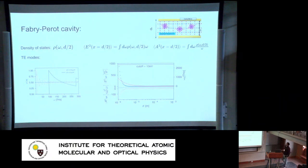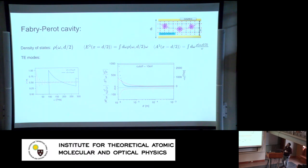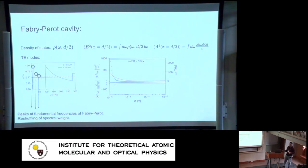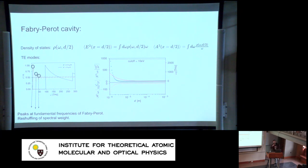I want to emphasize that the vacuum fluctuations alone are infinite, but their difference — photonic structure minus vacuum — is finite. Here are the results for the Fabry-Perot cavity, where D is the cavity size. I'm plotting the density of states as a function of position, divided by the free-space density of states, as a function of frequency. You can clearly see peaks corresponding to the resonant modes of the Fabry-Perot cavity, but zooming out, the average density of states doesn't change much — spectral weight is mostly reshuffled from low frequencies to the resonances.